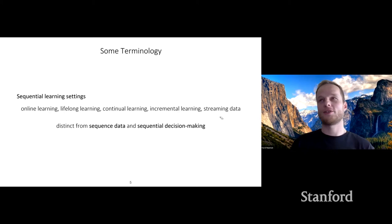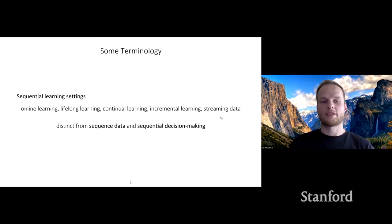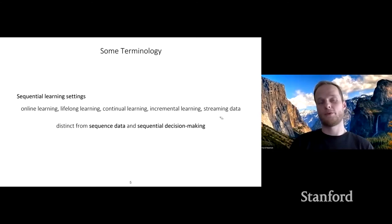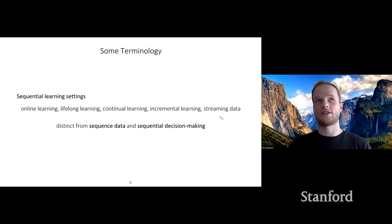It's important to note this is distinct from sequence data or sequential decision making. Sequence data — like corpus text — involves generating one word after another, but you're still pre-trained on a large batch. Sequential decision making, as in reinforcement learning, involves sequential decisions but can still be done from an offline dataset. Neither necessarily means you're given new tasks as you go.